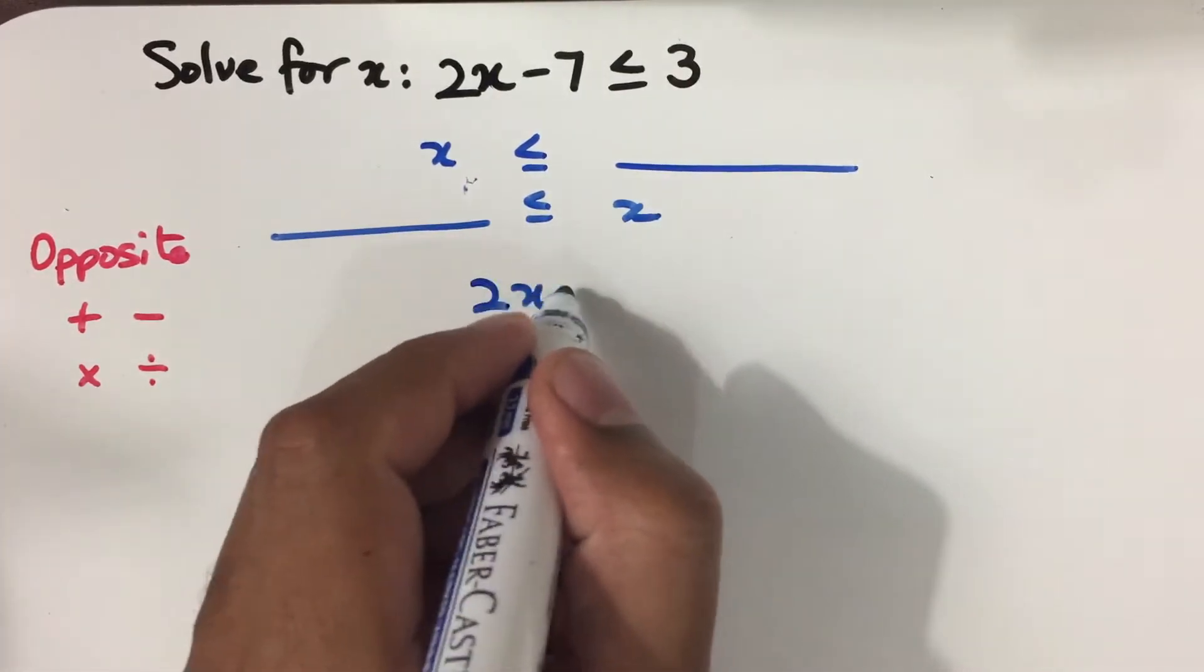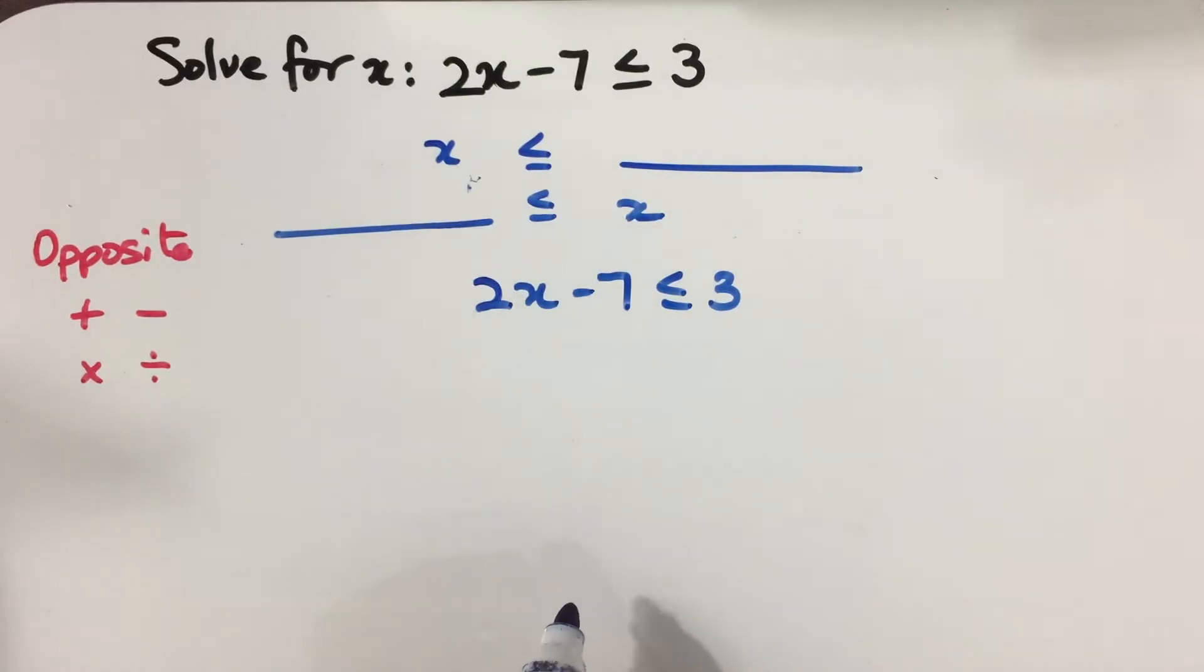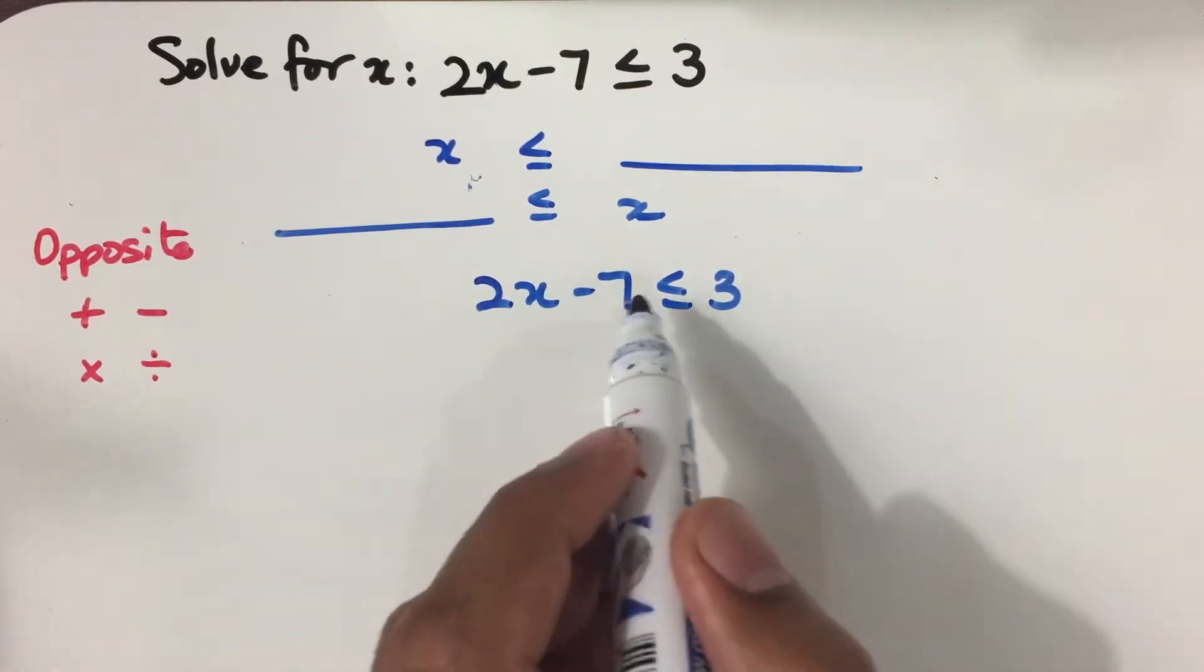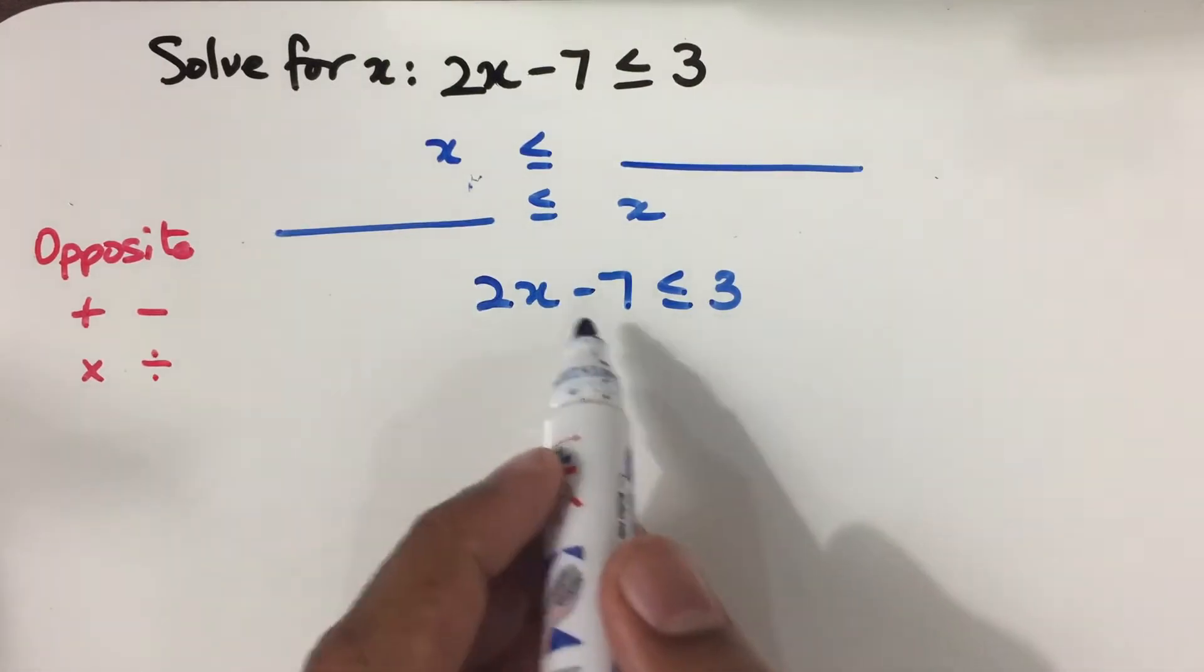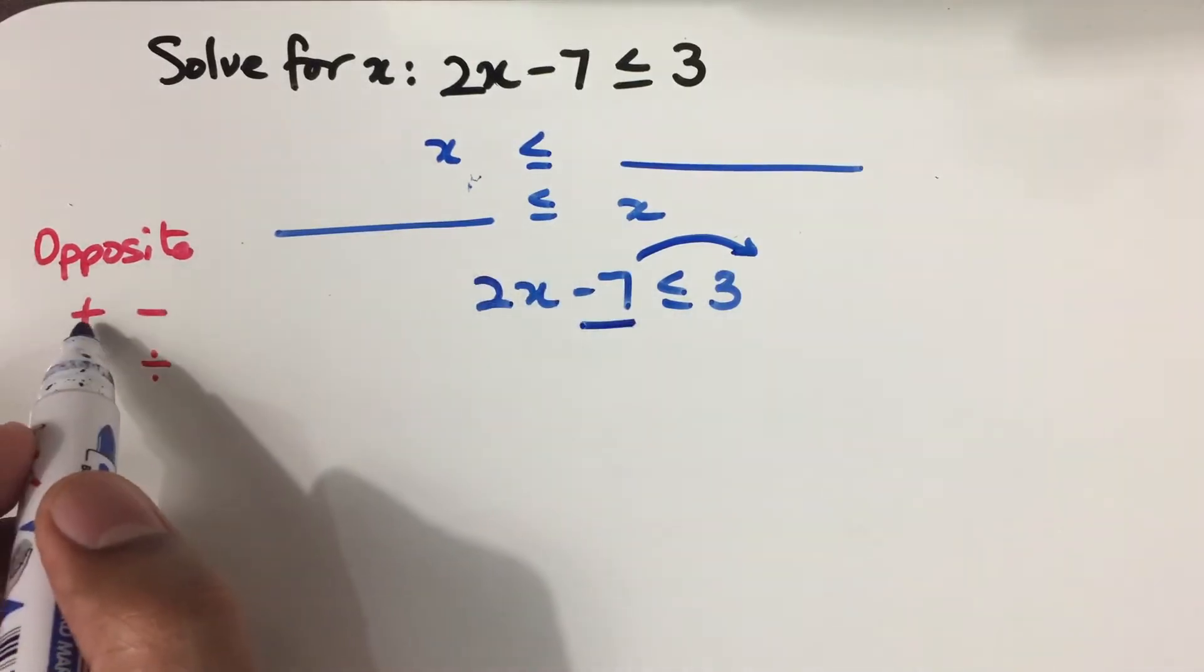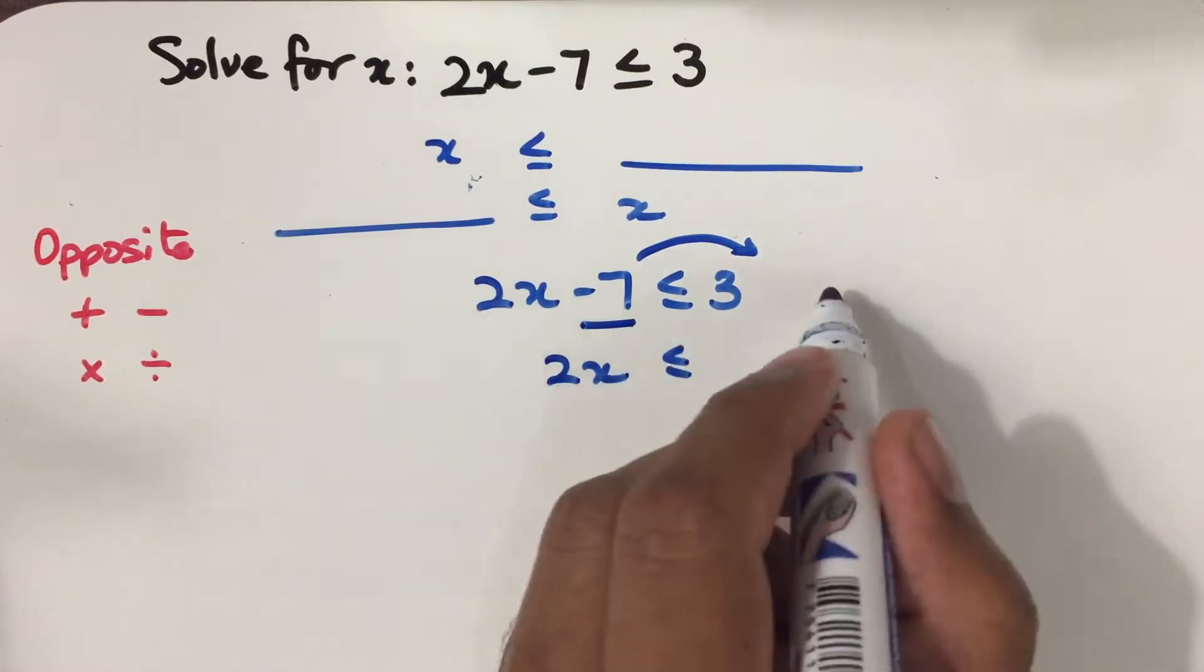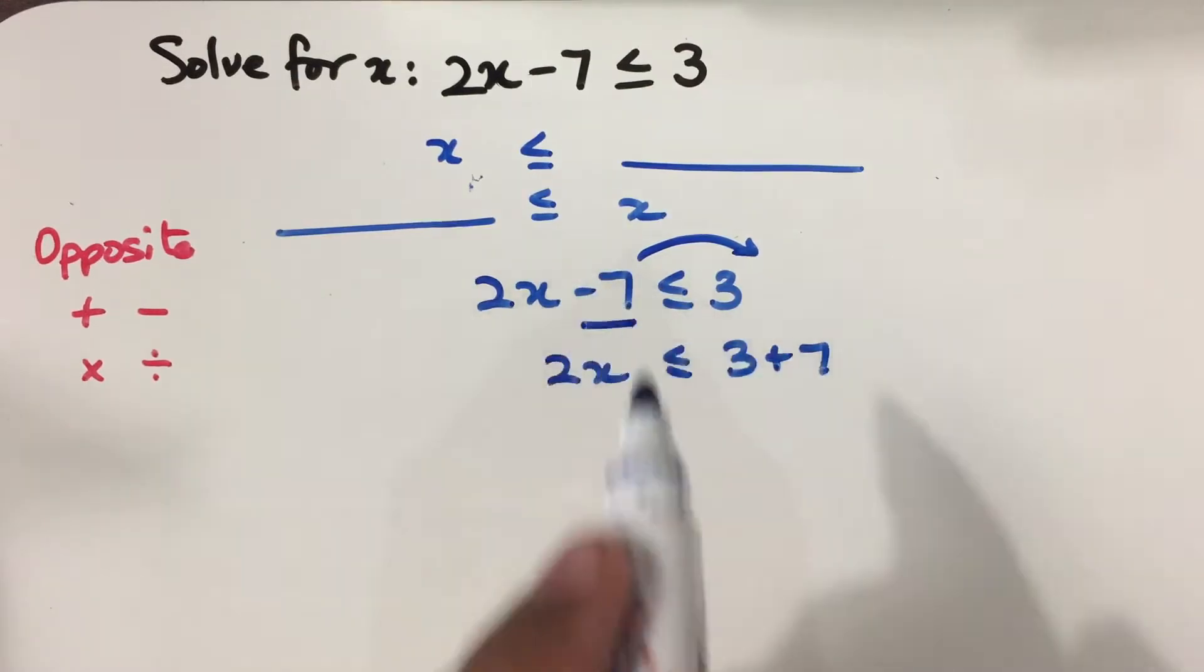We have 2x minus 7 is less than or equal to 3. Now, we want to make x on the left-hand side of the inequality. To do this, we need to get rid of the negative 7 and move it across to the other side. We have minus 7, and the opposite of minus is a plus. So to carry over the 7 across, it becomes plus 7. So now we have 3 plus 7 and the minus 7 is removed from the left-hand side.